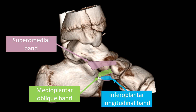The nomenclature is based on the insertion onto the navicular bone, which makes it very easy to remember. The supramedial band inserts medially and superiorly onto the navicular bone, hence 'supramedial.' The medioplantar oblique band also inserts medially onto the navicular bone but on the plantar aspect — 'medioplantar' — and oblique because it runs obliquely on an axial section. Correspondingly, the inferoplantar longitudinal band inserts inferiorly onto the navicular beak on the plantar aspect, and is longitudinal because it has a more longitudinal orientation along the foot.